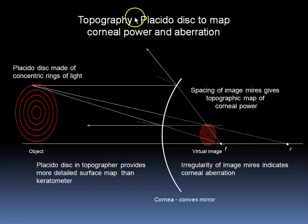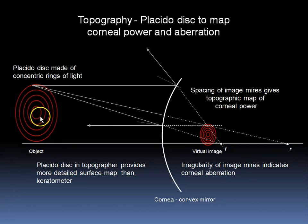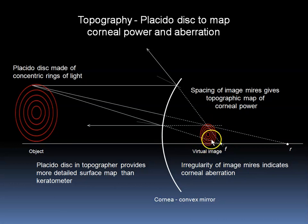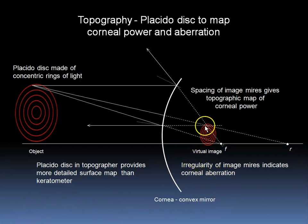Topography is a more comprehensive version of keratometry which analyzes more of the corneal surface. Here we have a Placido disk made up of concentric rings of light that form a virtual image behind the convex mirror lens surface of the cornea. This virtual image is upright and minified. The regularity or irregularity of the image rings indicates the evenness of the refractive power of the surface of the cornea. Where the image is very irregular, we have a surface with corneal aberration. The spacing of the image rings gives a topographic map of the corneal power.